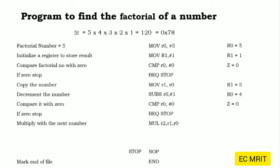5×4 is 20, which is equivalent to 0x14 in hexadecimal. This result is saved in our result register R1 — we copy the value from R2 into R1, so R1 now holds 20 (0x14 in hexadecimal).